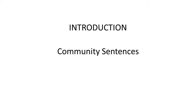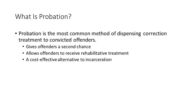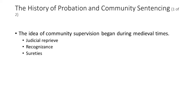Probation is the most common method of dispensing correctional treatment to convicted offenders. It is a criminal sentence that suspends or delays a correctional term in a prison or jail so that instead of being incarcerated, offenders are returned to their communities for a period in which they must follow certain terms and conditions set by the court and be monitored by a probation officer.